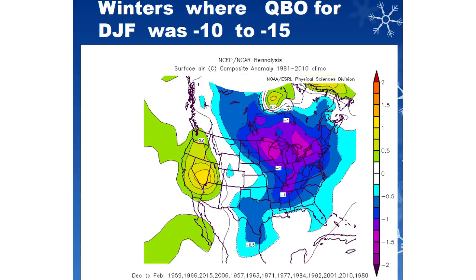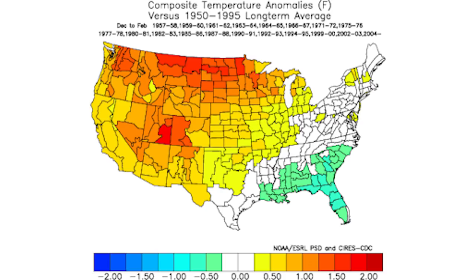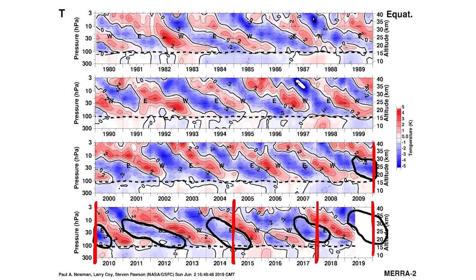Our next photo shows a positive QBO, and you can see it leads to a little bit of cold in the southeastern United States but a lot of warmth for all of the northern and western United States. This leads to a very overall warmer winter — a lot like last winter actually — which is what you could expect with a positive QBO.